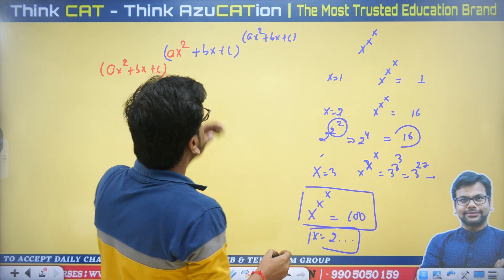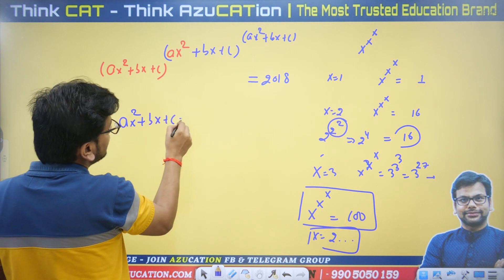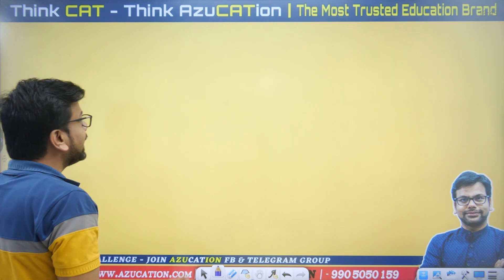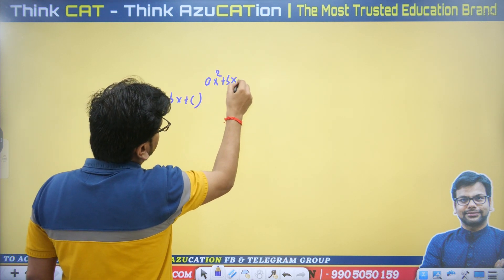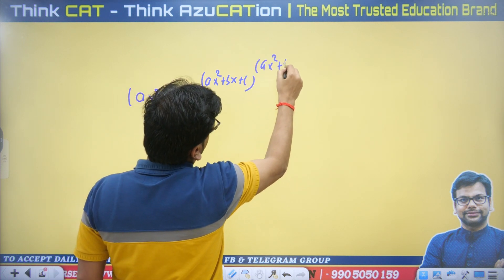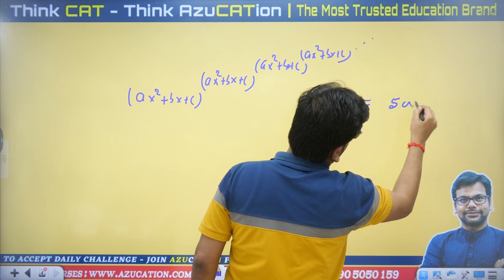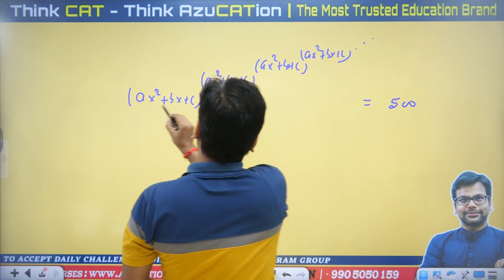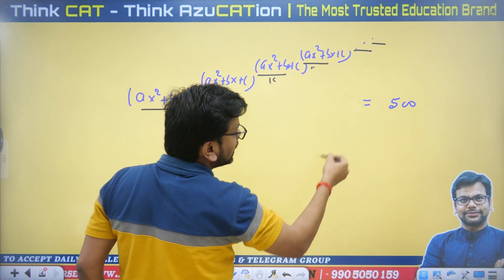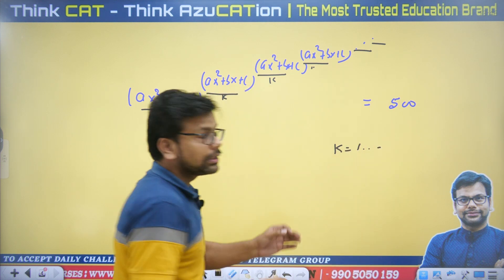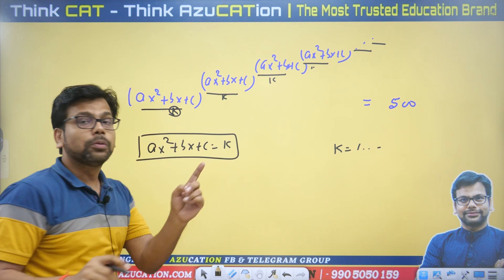So we have a single unique value. If this expression equals 2018, then ax² + bx + c equals some unique constant — 2-point-something. Similarly, for an infinite tower of the same polynomial raised to itself equal to some value like 500, this expression still leads to one unique constant k. So we can say ax² + bx + c equals one constant value k, and there is one unique value. I hope that is clear.